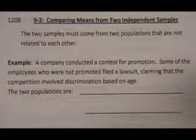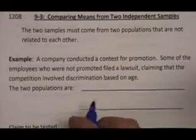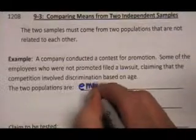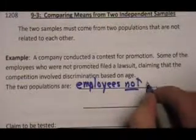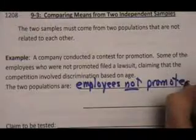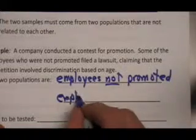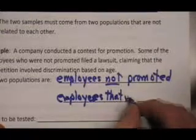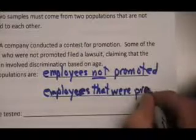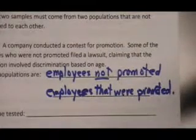This is comparing means from two samples of independent populations. The first thing we need to do is identify what these two populations are. One population is the employees who were not promoted, and of course the other population is the employees who were promoted.